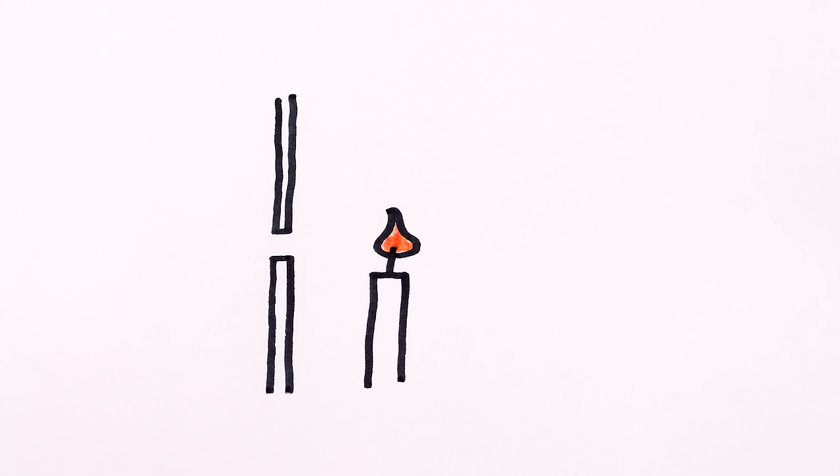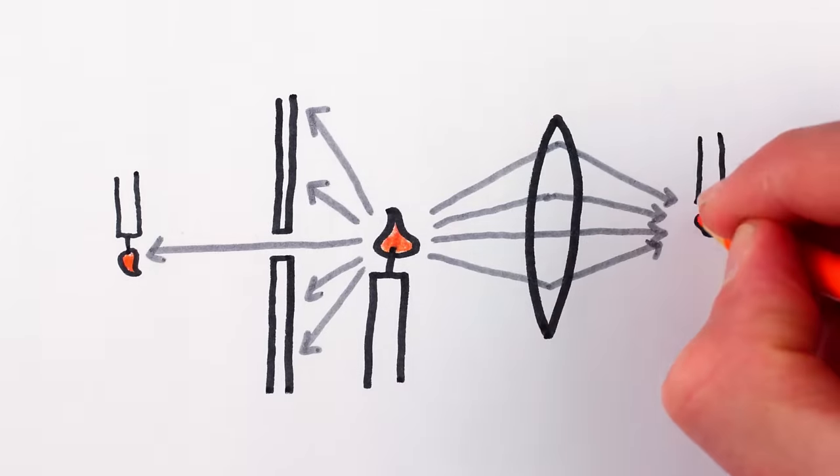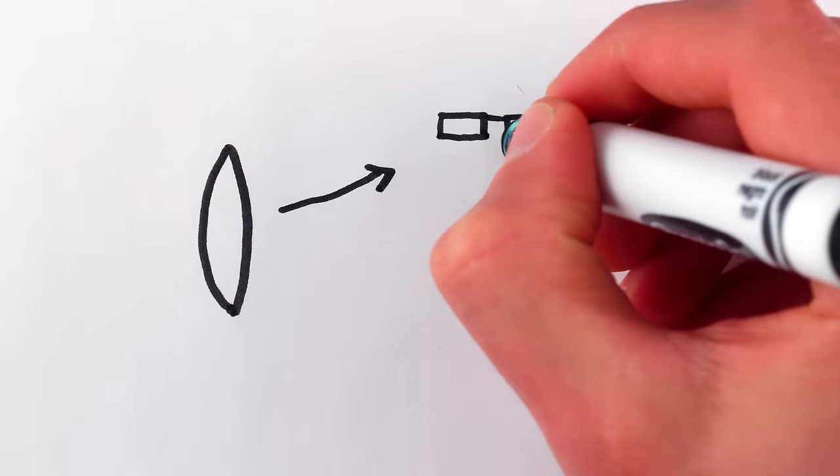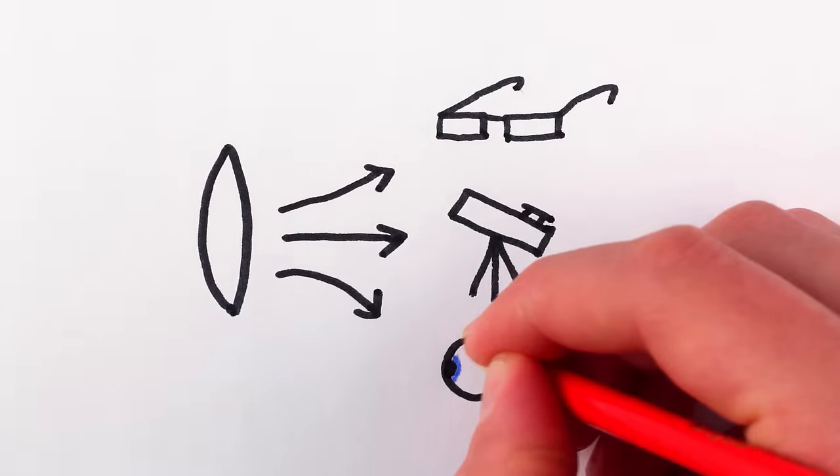Of course, small openings like pinholes and camera apertures create crisp images by blocking rather than focusing light, so the images are much darker, which is a major reason why we use lenses rather than pinholes for glasses, telescopes, and eyes.